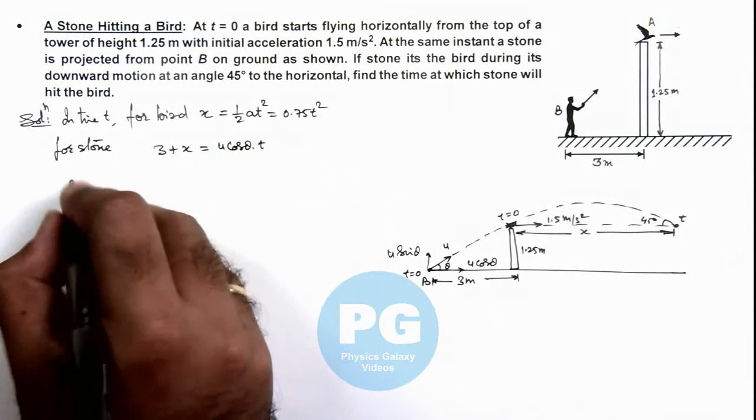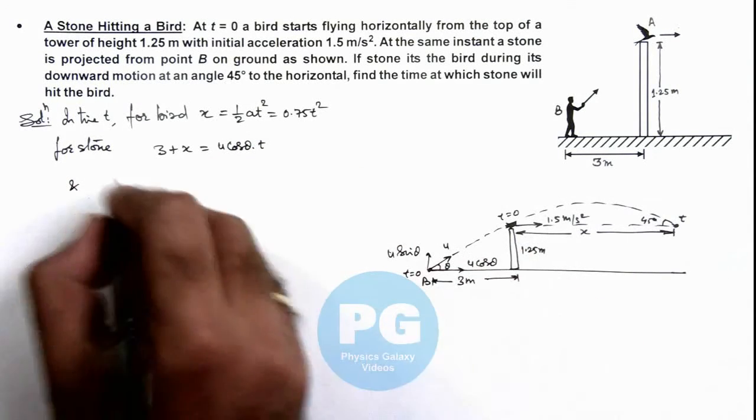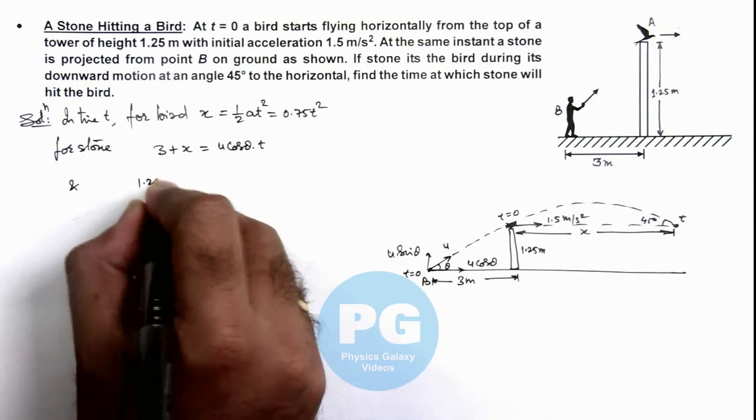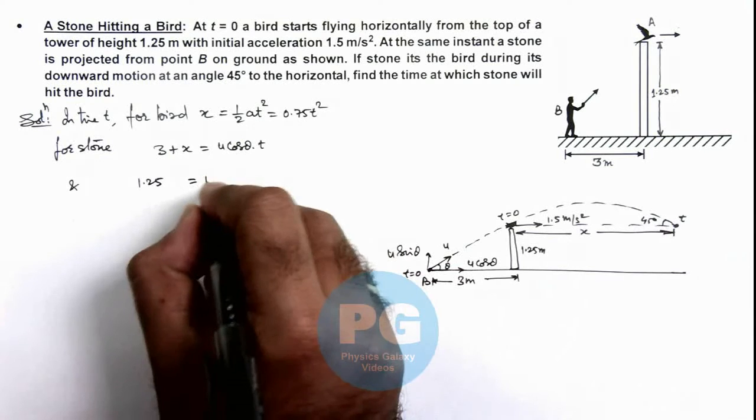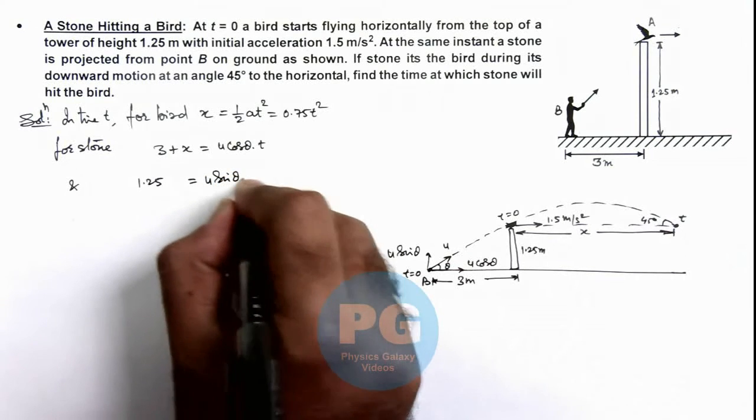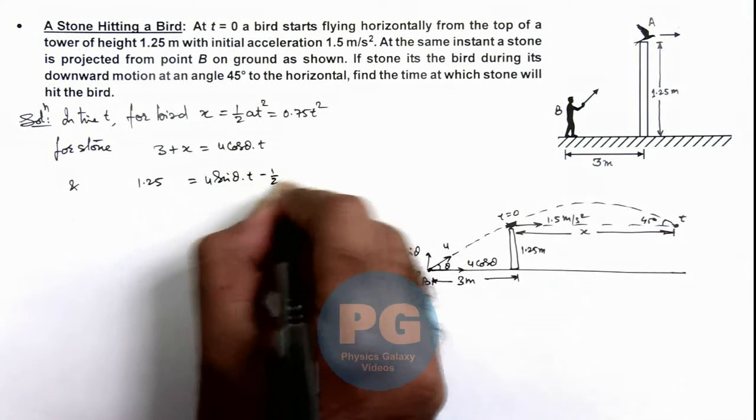In the y direction, we can write the stone has traveled a distance of 1.25 meter, which is equal to u sin theta t minus half g t square.